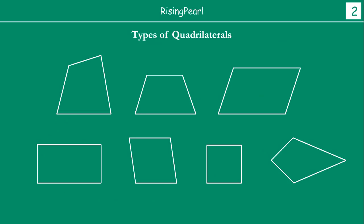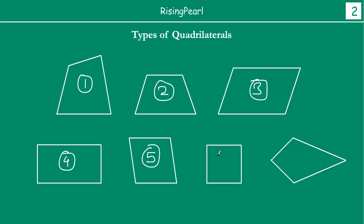Now these are dosta different types and shapes of quadrilaterals. Yaha pe we have drawn some quadrilaterals — this is our first, second, third, fourth, fifth, sixth and seventh. Aap dekho ke dosta ye jo saat humne shapes yaha pe draw ki hain, they all have four sides: one two three four, one two three four — all of these are quadrilaterals dosta.